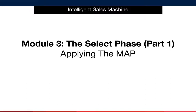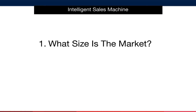Now that we know what the map is, let's look at how to apply it and choose our best product opportunities. I'll be doing this with you step by step, so follow along, watch the process, then go back and apply it piece by piece. Take your time with this and make certain that you follow the rules I've laid out for you. If you do this, you'll choose the correct products that will fuel your business for years to come. I'll begin by diving deeper into step one of the process, where we'll determine the size of the market. Let's take a look at exactly how to do this on Amazon.